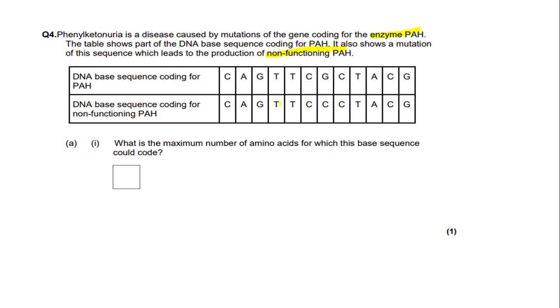Counting the bases, there are twelve bases in total, which gives us four triplets — so the maximum number of amino acids for which this base sequence could code is four. Looking at the mark scheme, the answer is four, so we would get the mark for this question.